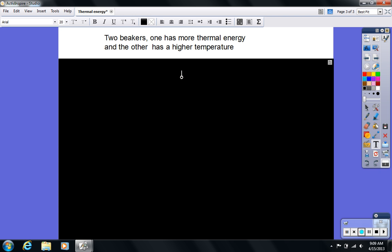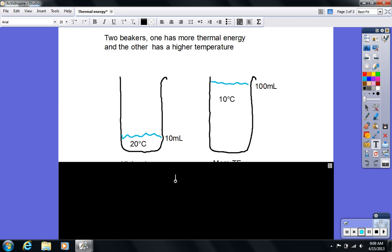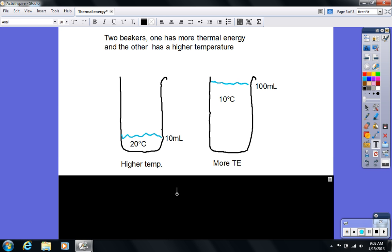Okay, so there's obviously going to be many different answers for this. You don't have to have exactly what I have. However, here would be one example of that. So, Beaker A here has the higher temperature. Beaker A's water is at 20 degrees, whereas Beaker B's water is at 10 degrees. So Beaker A has the higher temperature. However, there's so much more water in Beaker B that it has more thermal energy.